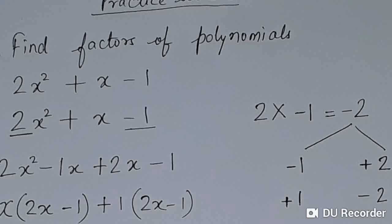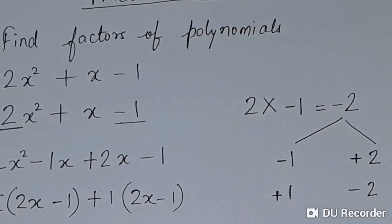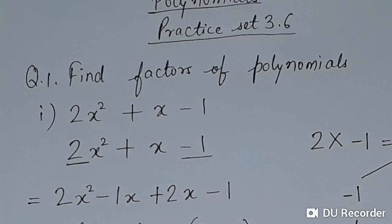We look at the middle term, which is x in 2x² + x - 1, so the coefficient is 1. By the first option, (-1) and (+2), we can achieve +1. So we take this as the correct option, and the polynomial can be rewritten as 2x² - 1x + 2x - 1.